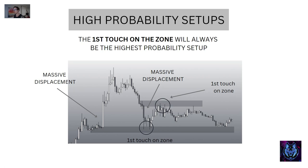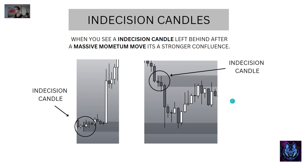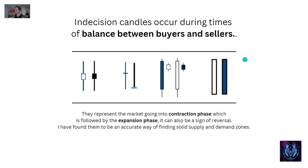Indecision candles are one of the first things I look for on the charts. I go to a higher time frame and spot them out — this is where price creates contraction, and after contraction we get expansion, then the trending phase. When you see an indecision candle left behind after a massive momentum move, it's a stronger confluence. Indecision candles occur during times of balance between buyers and sellers, representing the market going into a contraction phase followed by expansion. They can also be a sign of reversal.